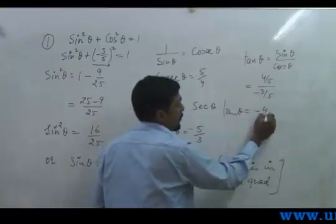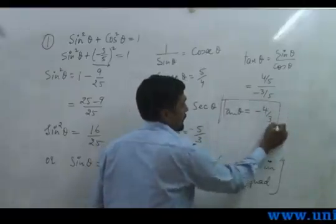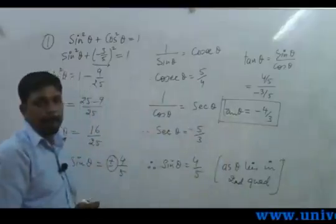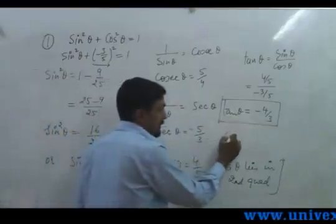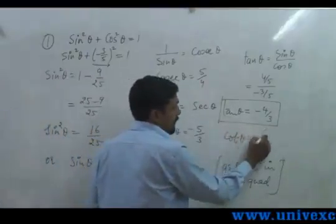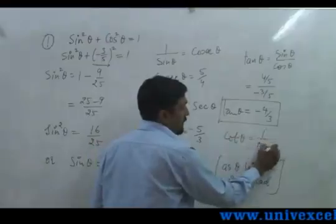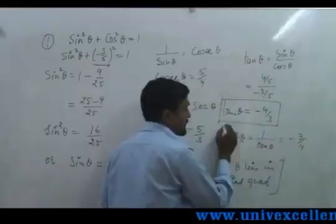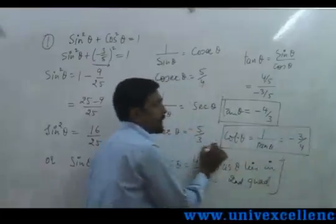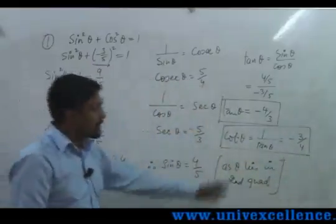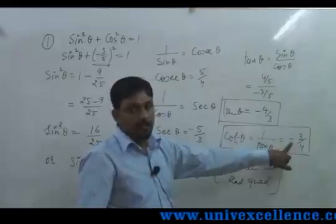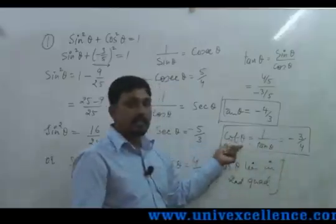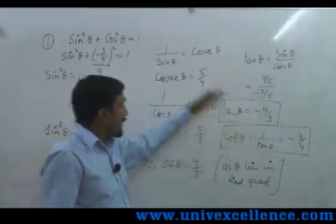minus 4 upon 3. And since cot theta is 1 upon tan theta, therefore the value of cot theta is minus 3 by 4. We put this minus because in the second quadrant, cot is negative. So this is one